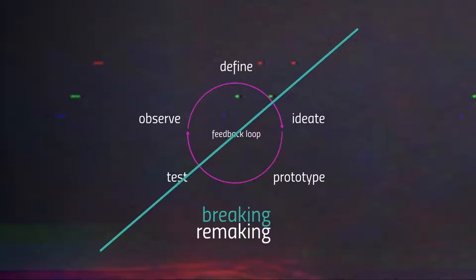The breaking stage involves analyzing the entire process so far by pulling the existing model of reality apart into constituent elements. The remaking stage — the synthesis stage — involves synthesizing a new model from the disparate elements identified in the breaking stage. This is a continuous cycle of iteration, of destruction and creation.